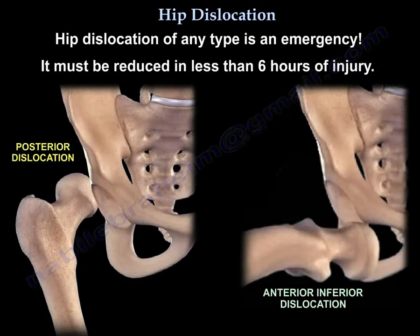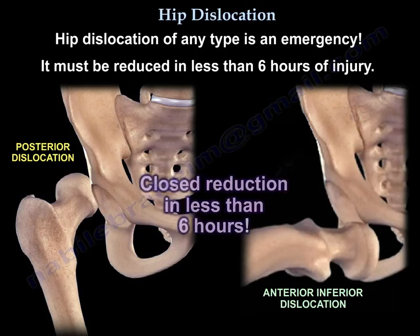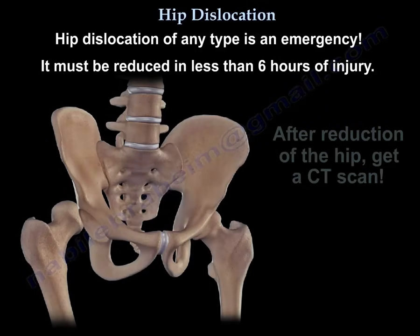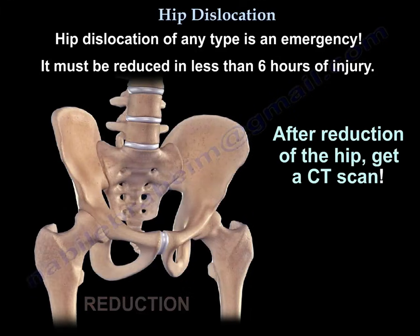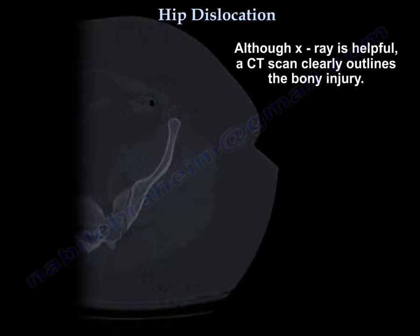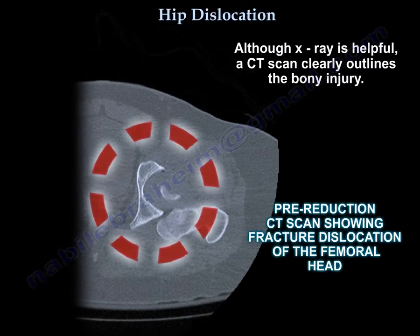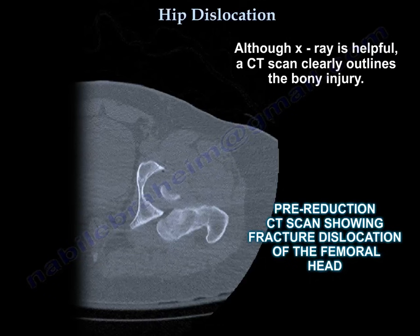Hip dislocation of any type is an emergency. It must be reduced in less than 6 hours. After reduction of the hip, get a CT scan. Although the X-ray is helpful, the CT scan clearly outlines the bony injury. Here is a pre-reduction CT scan showing a fracture dislocation of the femoral head.